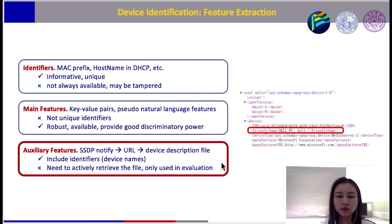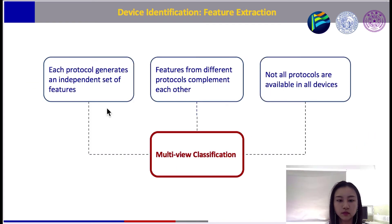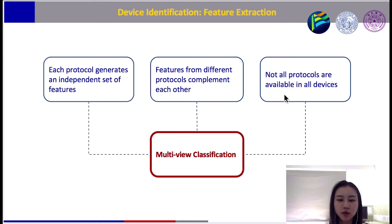Finally, we extracted features from device description files retrieved through URLs in SSDP Notify packets. These were only used to improve the accuracy of our approach. Our initial observations tell us three things: first, each protocol generates an independent set of features; second, features from different protocols complement each other; third, not all protocols are available on all devices. Intuitively, these observations suggest the use of multi-view learning, where features from different protocols are laterally organized into views and the classifier is optimized across all views.